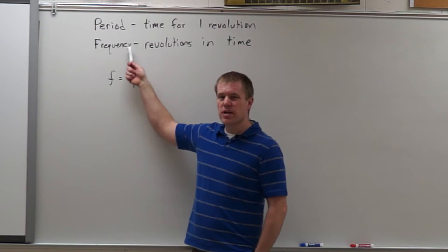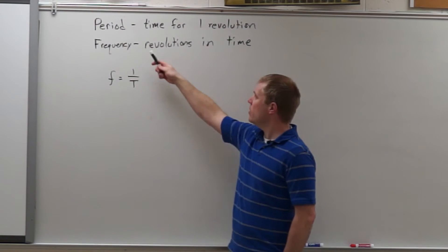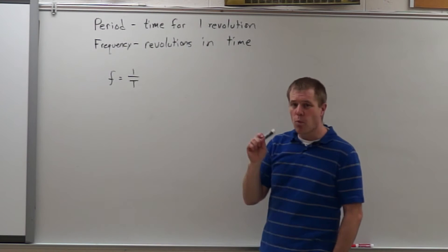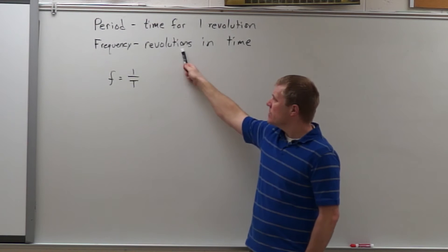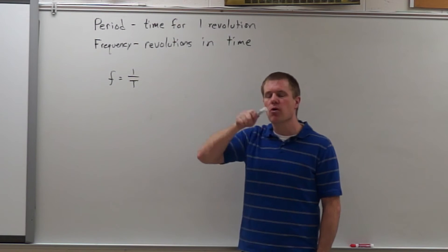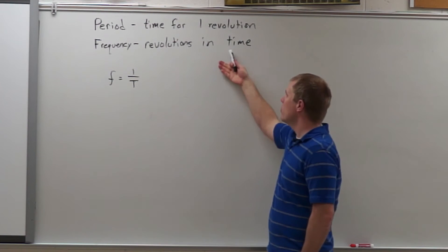Alright, here we're going to talk about period and frequency and how they differ. Period tells me the time for one rotation, so how long does it take to go around one time. Frequency tells me how many times it rotates in a given amount of time.